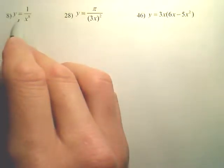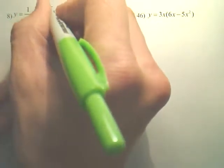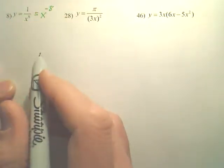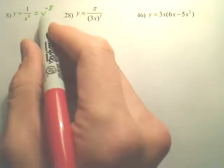Number 8. I want to find the derivative. To find the derivative, the first thing you want to do is rewrite this as a negative power. Then once you have that as a negative power, the way you do the derivative, this is the power rule.